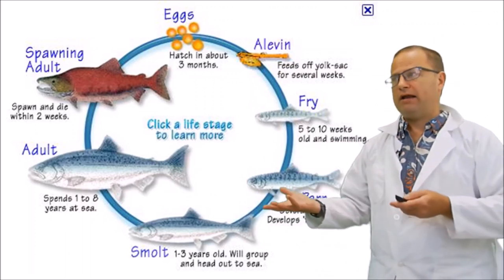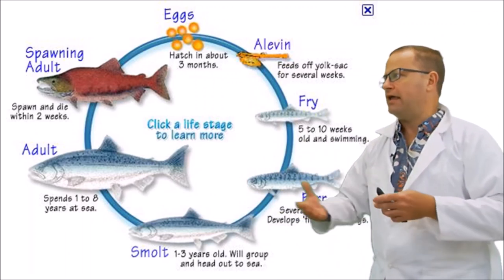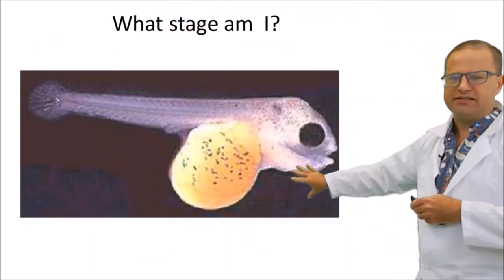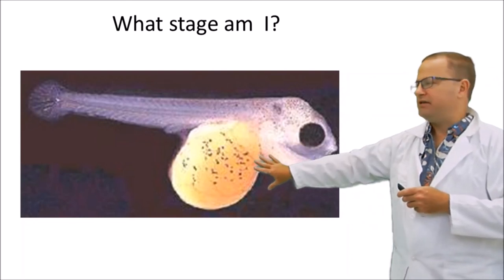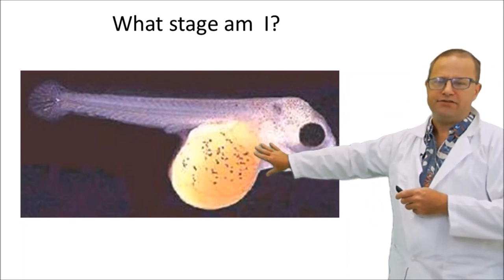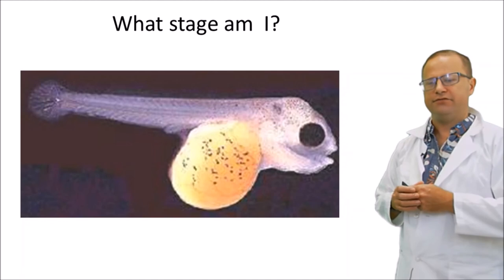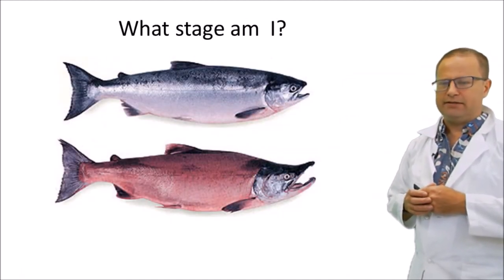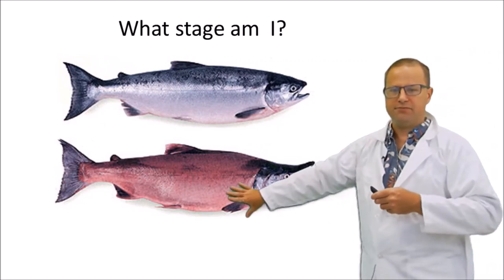But it's not what happens in Hawaii or in saltwater. So let's look at some examples here. What stage do you think this would be? Yeah, this right here would be a yolk sac larva, otherwise known as an alevin. Very good.